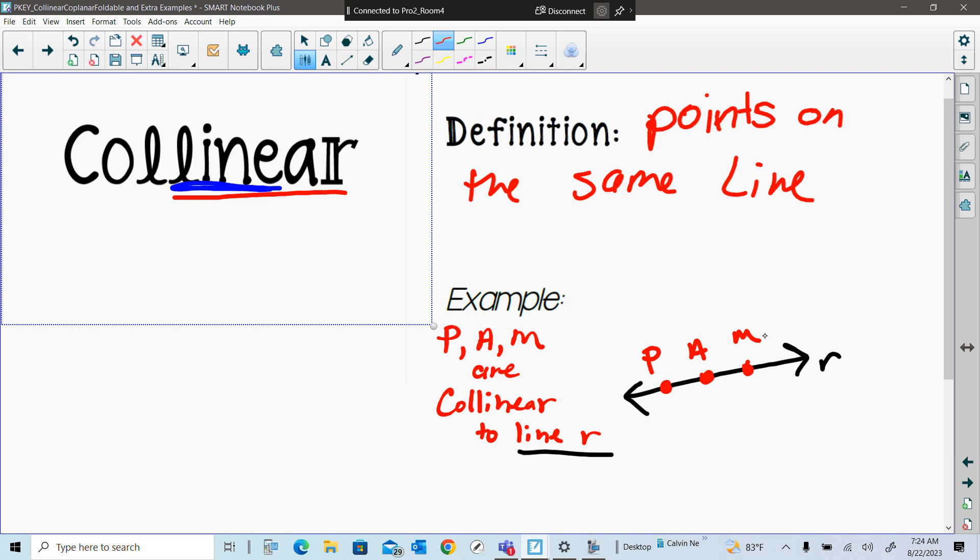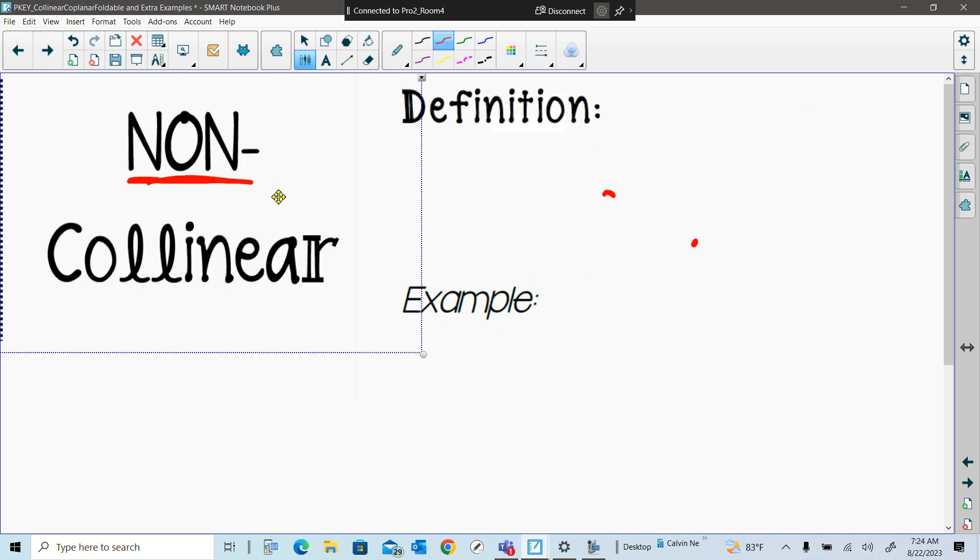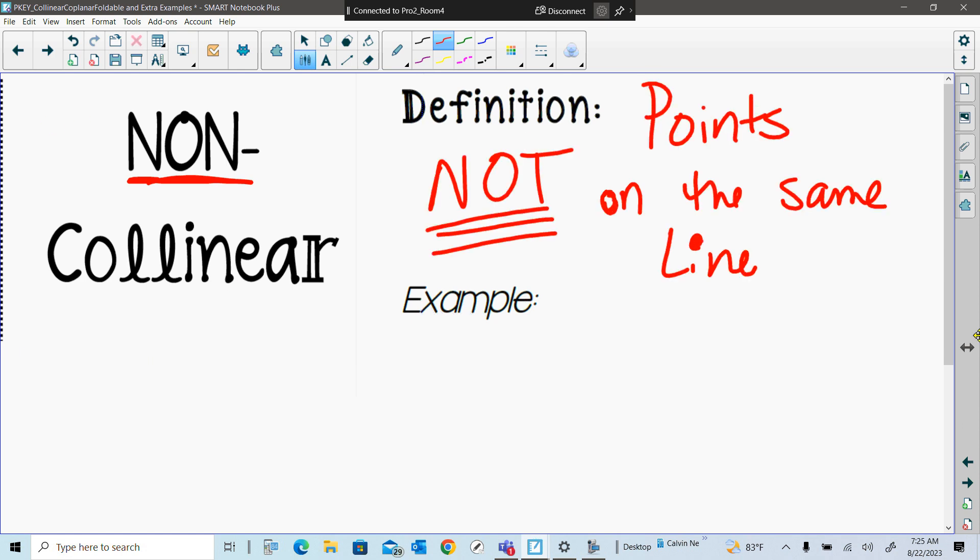Draw a line r, make sure it has double arrows and has the r next to it, and then points P, A, M are on the line. So that's collinear. So then if I were referring to non-collinear, what do you think that's going to mean? Yeah, not points not on the same line. So points not, add that to your tab please, points not on the same line.